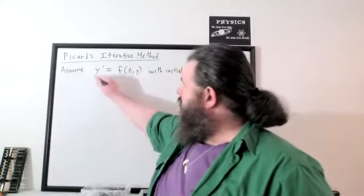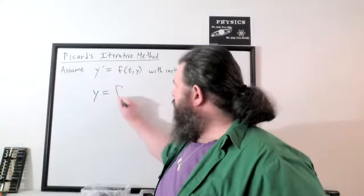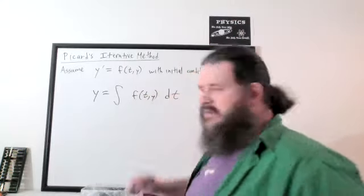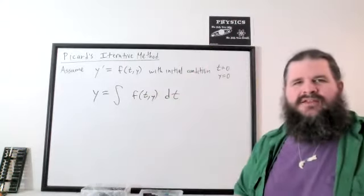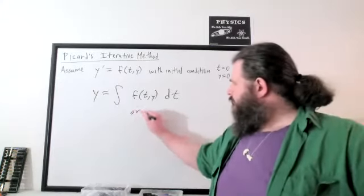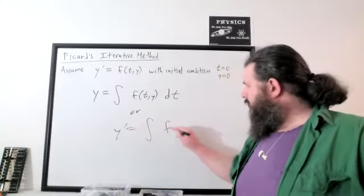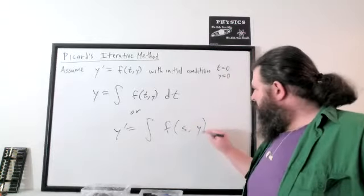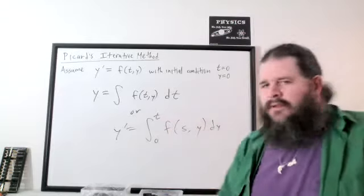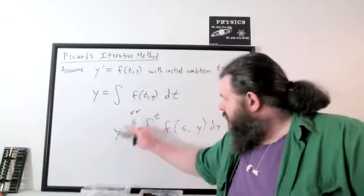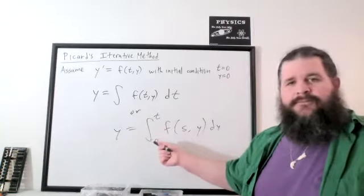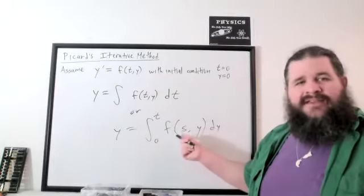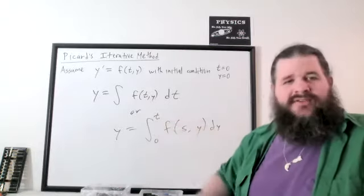The main idea of Picard's method is rewriting the differential equation as an integral equation by taking the integral of both sides. So instead of saying the derivative of y is all this stuff, we say y is the integral of all this stuff with respect to t. Since we're technically using the fundamental theorem of calculus here, we use a placeholder variable s and integrate from 0 to t, so it ends up becoming t anyway.